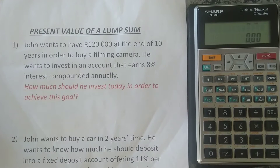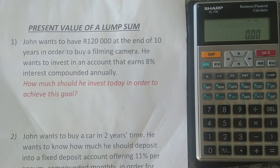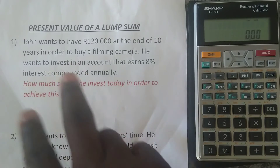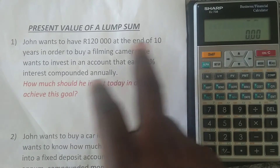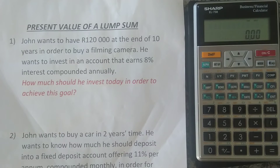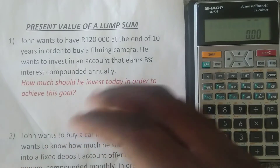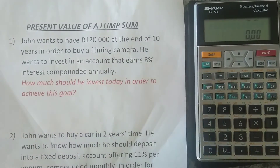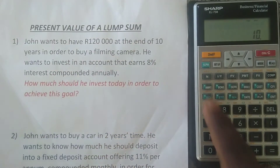Here it says it's compounded annually. If it's compounded annually, it's actually very easy because in your financial calculator the default compounding is annually, so you don't have to change anything. You just put whatever you're given at face value. The first thing you want to do is put the number of compounding periods, which is 10 years — because it's compounded annually, the number of years equals the number of compounding periods. So we put 10 and then press 'N', which stands for the number of compounding periods.